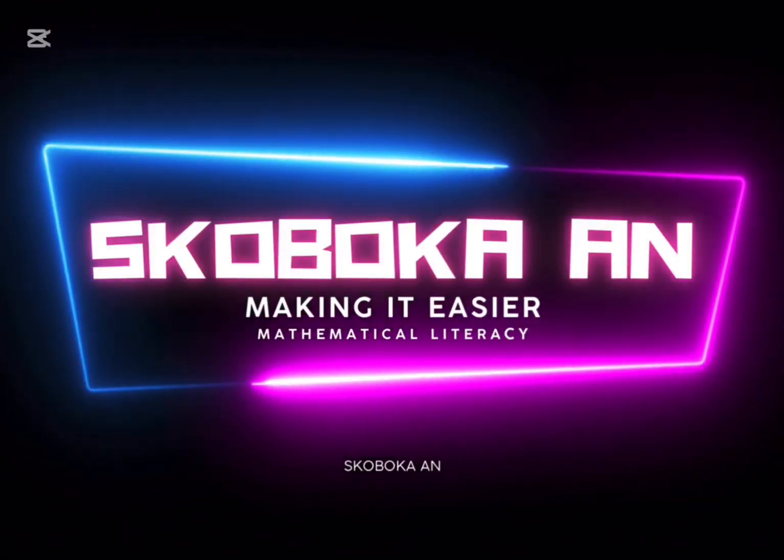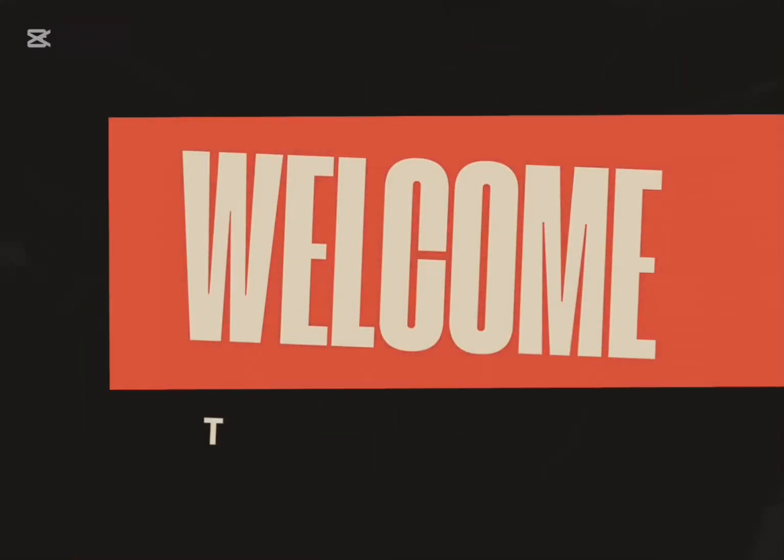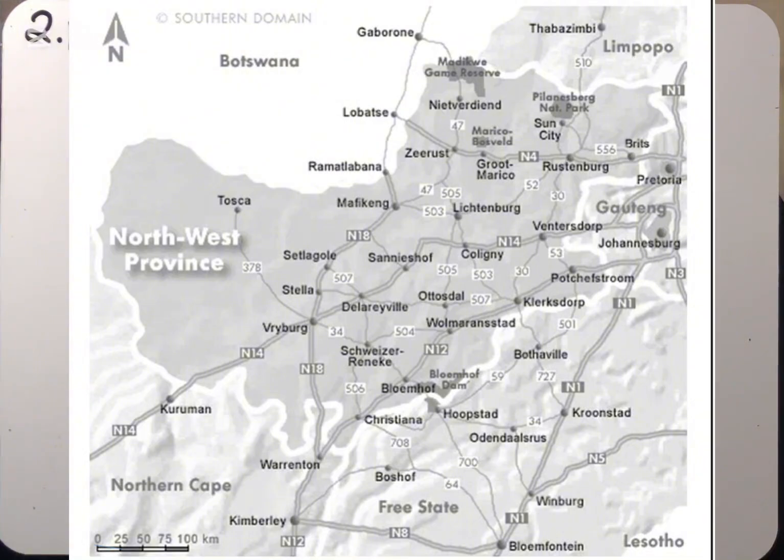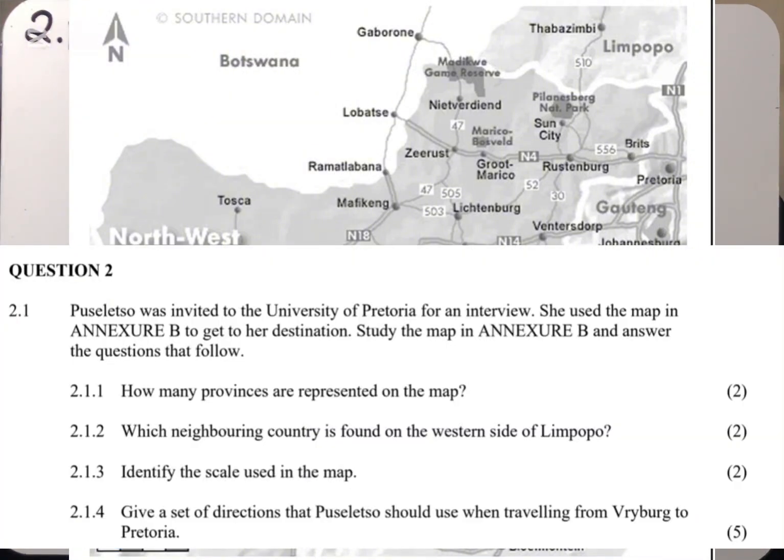Greetings once again, I welcome you to my YouTube channel. In today's video we'll be dealing with maps, which is a grade 11 and grade 12 content, but the question that we'll be answering here is from grade 12, a previous question paper. It's question two. It reads: Puseleto was invited to the University of Pretoria for an interview.